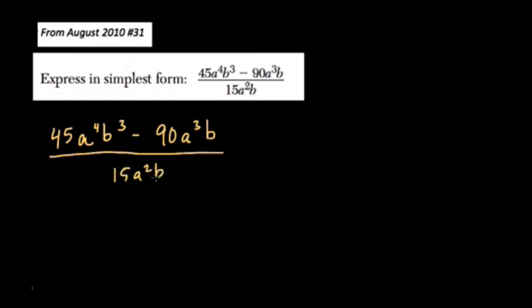And all this means is that when we have 45a⁴b³ minus 90a³b over 15a²b, this means use every law of exponents that you know of and divide every number you can until everything has been reduced and you can't go any further.